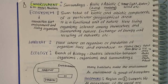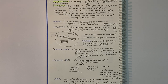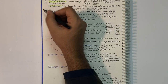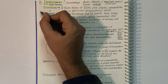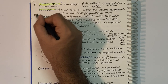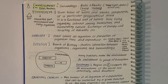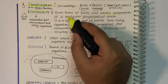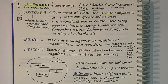Ecosystem is the sum total of biotic and abiotic components of a particular geographical area. It is a functional unit of nature where living organisms interact among themselves and with surrounding nature — they exchange energies and recycling of nutrients takes place in the environment.